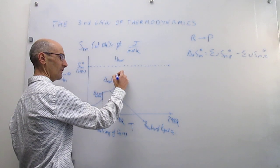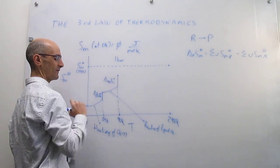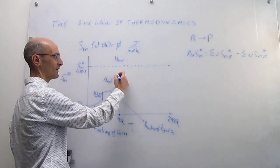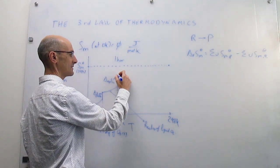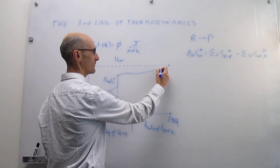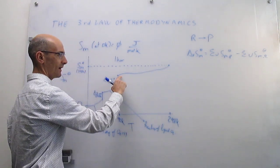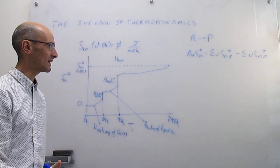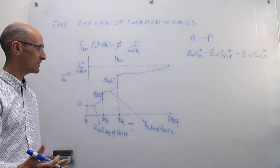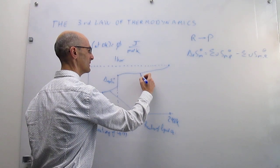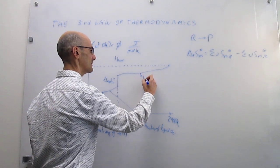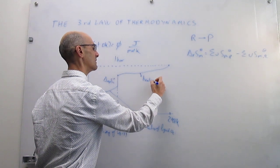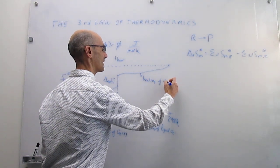At the end of the phase transition, you have gas oxygen at 90 Kelvin. The last thing you need to do is simply elevate the temperature of that gas to 298 Kelvin. The entropy should increase because you're heating this gas, and this would simply be the heating of O2 gas.